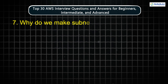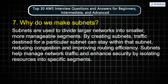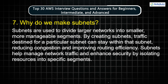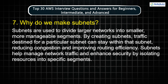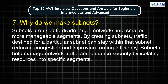Question 7: Why do we make subnets? Subnets are used to divide larger networks into smaller, more manageable segments. By creating subnets, traffic destined for a particular subnet can stay within that subnet, reducing congestion and improving routing efficiency. Subnets help manage network traffic and enhance security by isolating resources into specific segments.